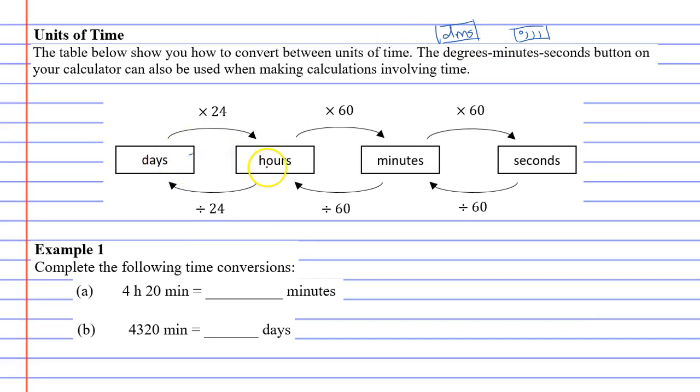Now, we'll talk about the diagram I have that shows you how to convert between units of time. You'll notice that you've got 24, 60, 60, and that's because there are 60 seconds in a minute, 60 minutes in an hour, and 24 hours in a day.